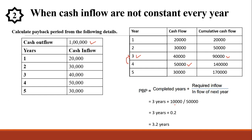Only after 3.2 years will the company be able to generate profit. In this way, we solve a problem sum where cash inflows are not constant every year. We solved two problem sums: one where cash inflow was constant and one where it was not constant. I hope everyone understood how to calculate payback period based on these two practical examples.